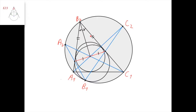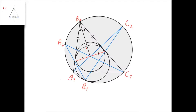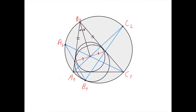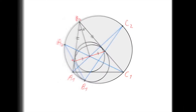Furthermore, this line and this line are the tangent lines from B2 to the mixtilinear incircle, and therefore the distance from B2 to this point equals the distance from B2 to this point. So this triangle is isosceles. We know that this is the angle bisector of this angle because this is the incenter of the triangle, and therefore it must also be the median and the altitude in this isosceles triangle. Therefore this distance equals this distance, so the incenter is the midpoint of the segment defined by the two points of tangency of the mixtilinear incircle with the sides of the triangle.